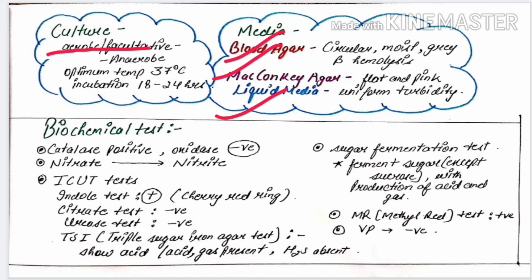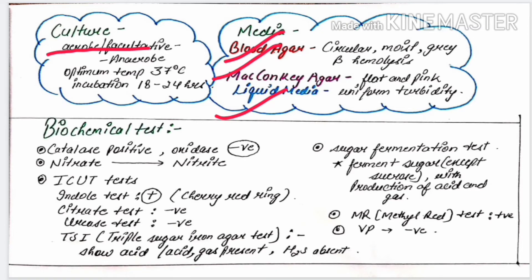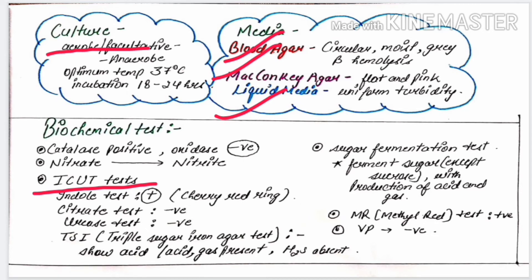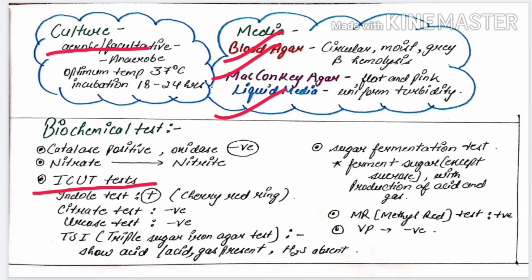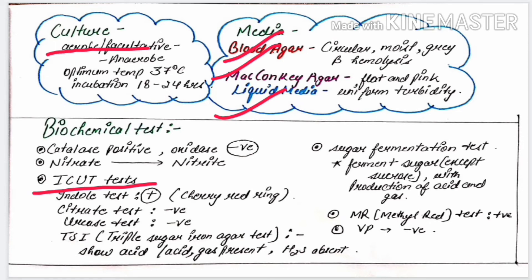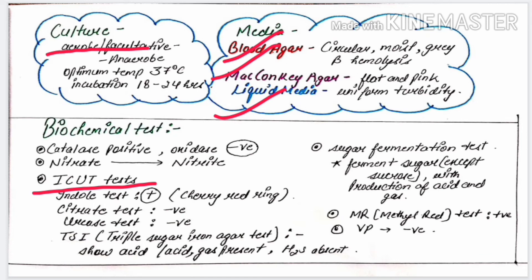Next is biochemical test. E.coli is catalase positive and oxidase negative. It reduces nitrates to nitrite. Next is ICUT test. It stands for indole test, citrate test, urease test, and TSI that is triple sugar iron agar test. E.coli is positive for indole, producing cherry red colored ring. E.coli is negative for citrate because it does not utilize citrate. E.coli is negative for urease because urea is not hydrolyzed by E.coli. TSI shows acid, gas, and H2S is absent.